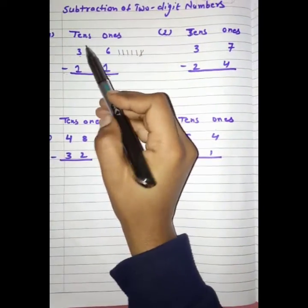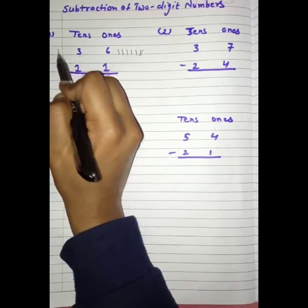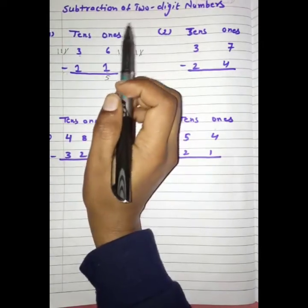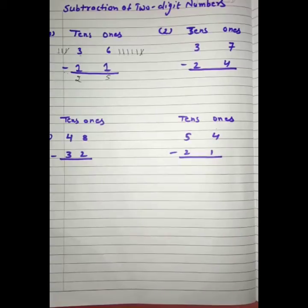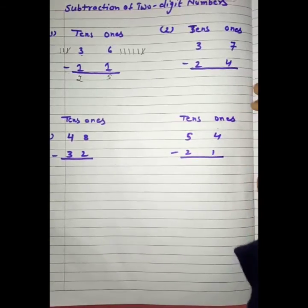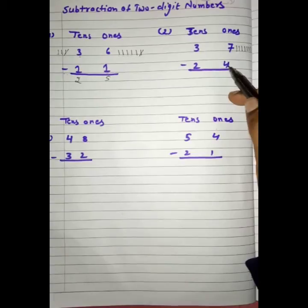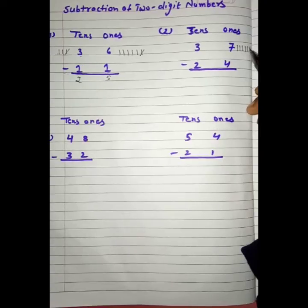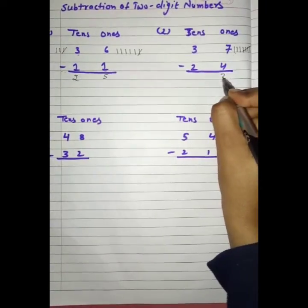Next hai 3 minus 1. Hame 3 minus 1 karna hai. We have to draw 3 lines, and ek number minus kar denge. Humare paas kitnay number bachenge: 1, 2. We have 2 here. Next hai 7 minus 4. We have to draw 7 lines: 1, 2, 3, 4, 5, 6, 7. Hum 4 minus kar denge: 1, 2, 3, 4. Kitnay bachye: 1, 2, 3. We have 3 here.